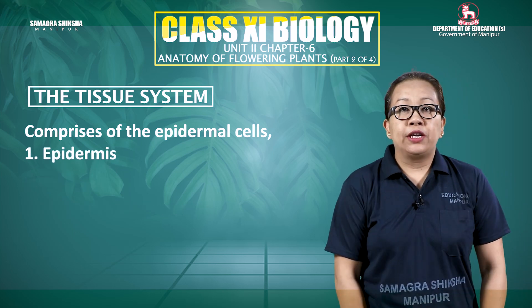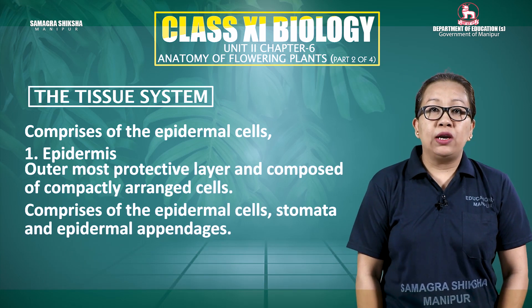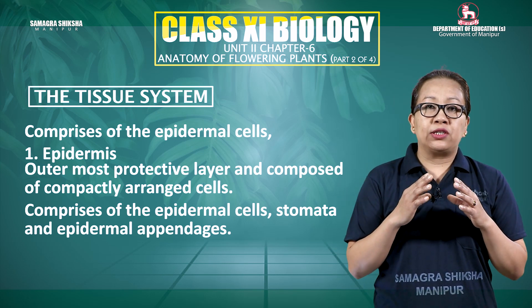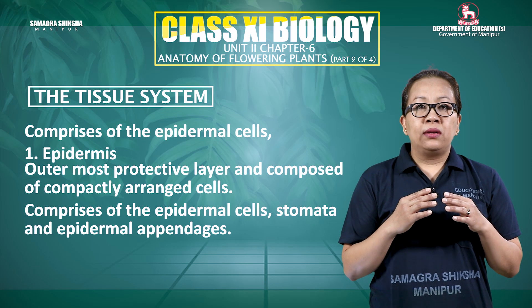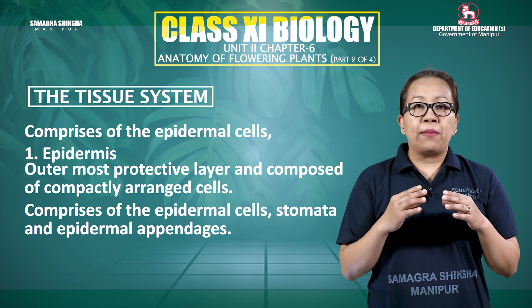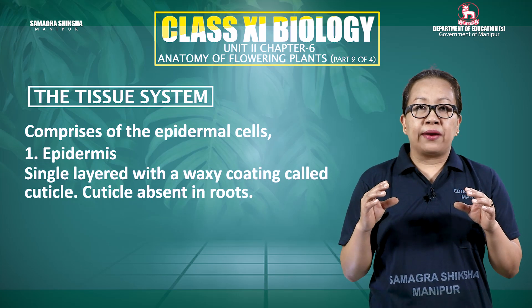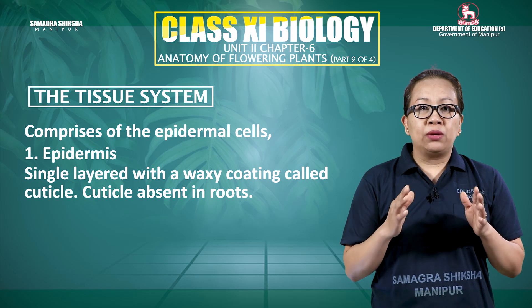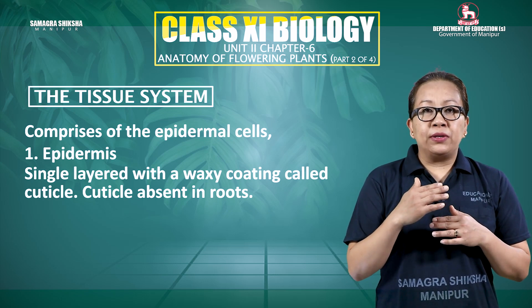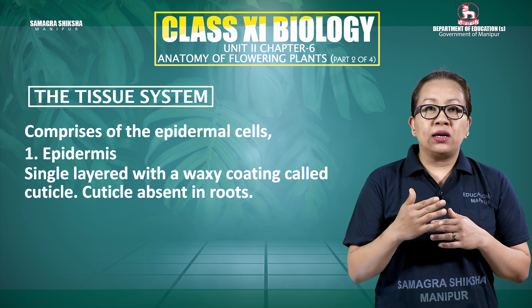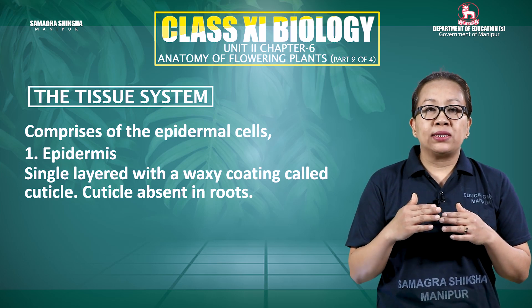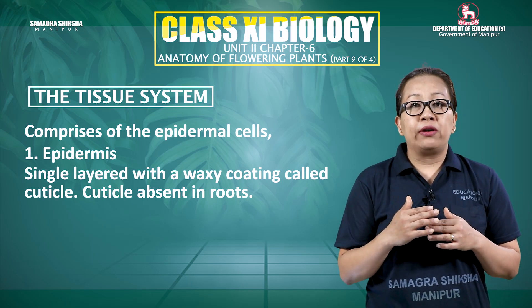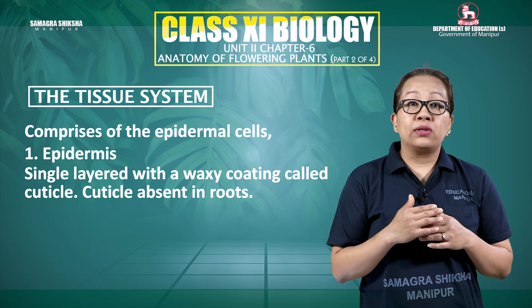The epidermis is made up of cells which are elongated and compactly arranged without any intercellular spaces. It is usually a single layer. It forms a continuous layer throughout the plant body. The exterior of the epidermis is covered by a waxy layer called the cuticle, which is waterproof. However, this cuticle is absent in roots.